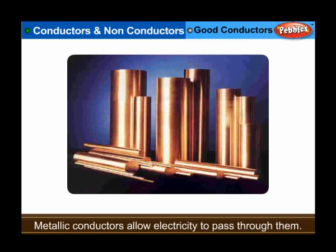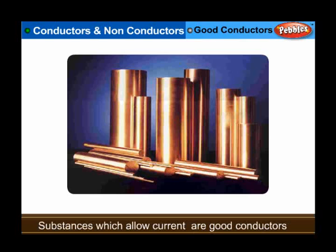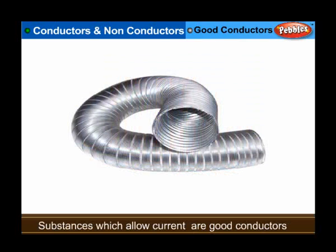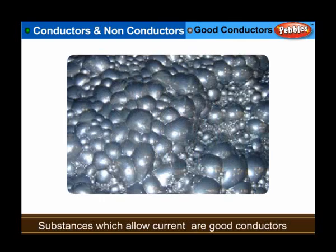Good conductors: metallic conductors allow electricity to pass through them, but during the passage of current these conductors are not chemically decomposed. They are known as good conductors. Examples include copper, aluminium, iron, zinc, etc.